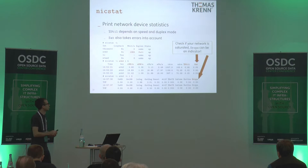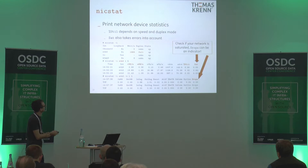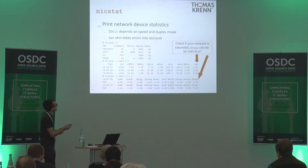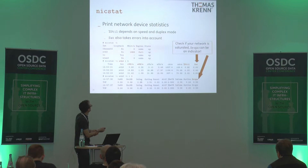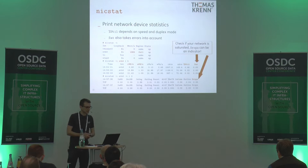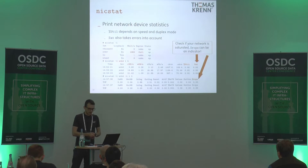NICSTAT is a tool for monitoring network devices. You get utilization here, which depends on the speed and duplex mode of your NIC. Saturation also takes errors into account. When your network is saturated, data drops can also be an indicator and you can use these tools to get data for that.